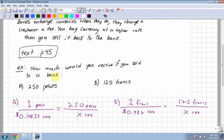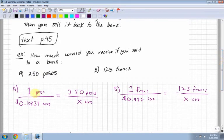Example: how much would you receive if you sold to a bank, for part A, 250 pesos? So I look at the currency exchange rate and I see that one peso is worth 0.10834 Canadian dollars. So I set this equation up where pesos are on top, Canadian dollars are on the bottom. And then the way I solve this is I cross multiply.